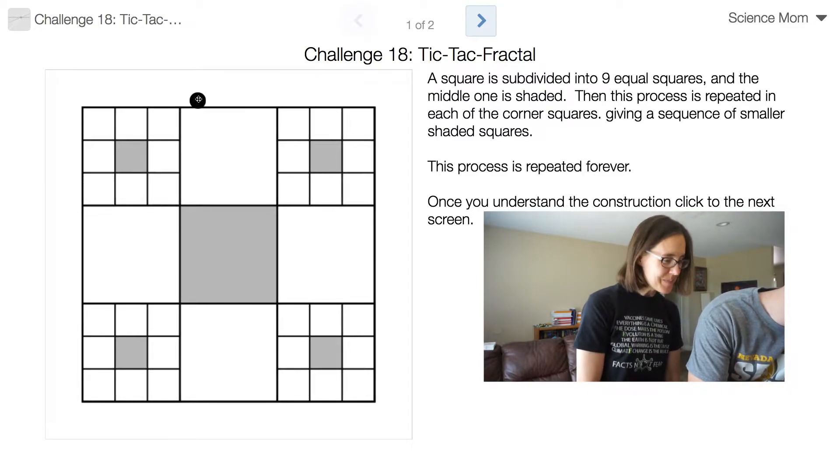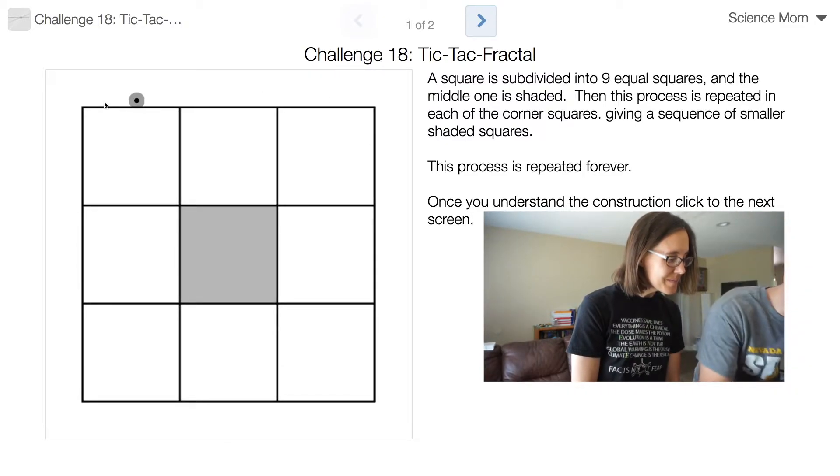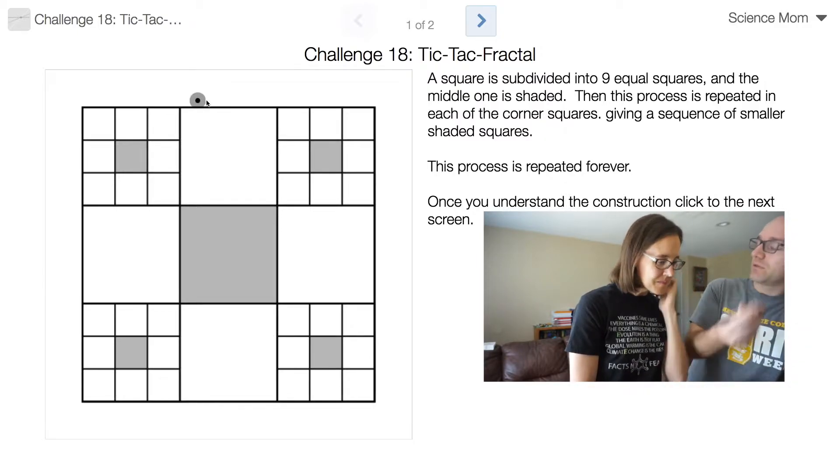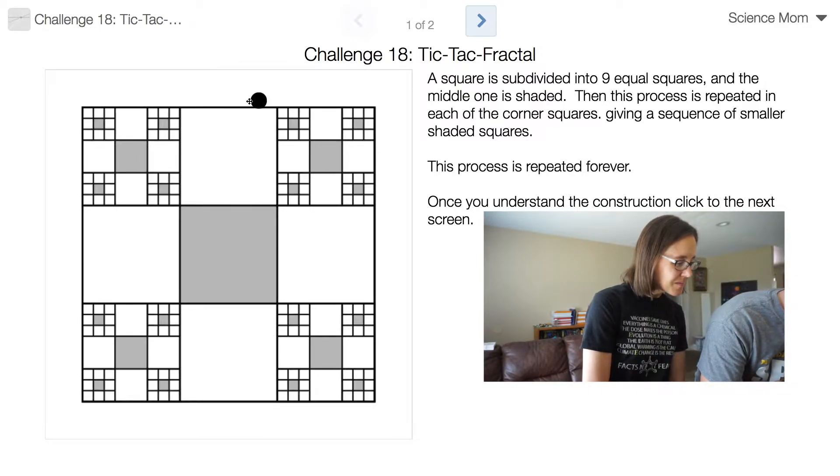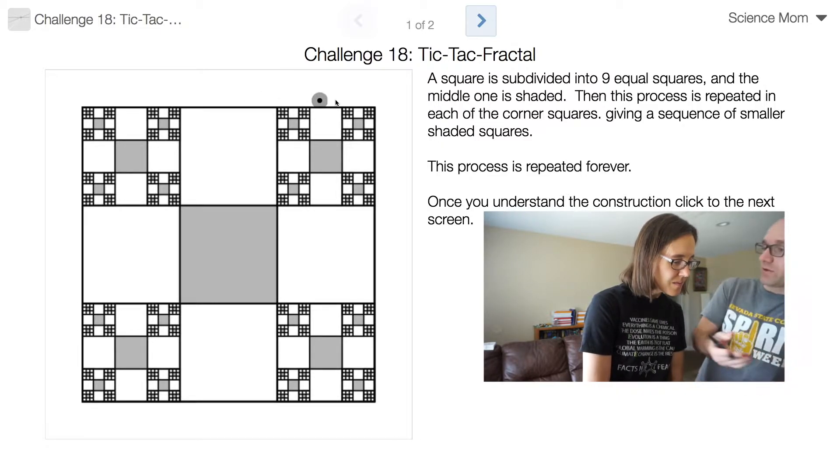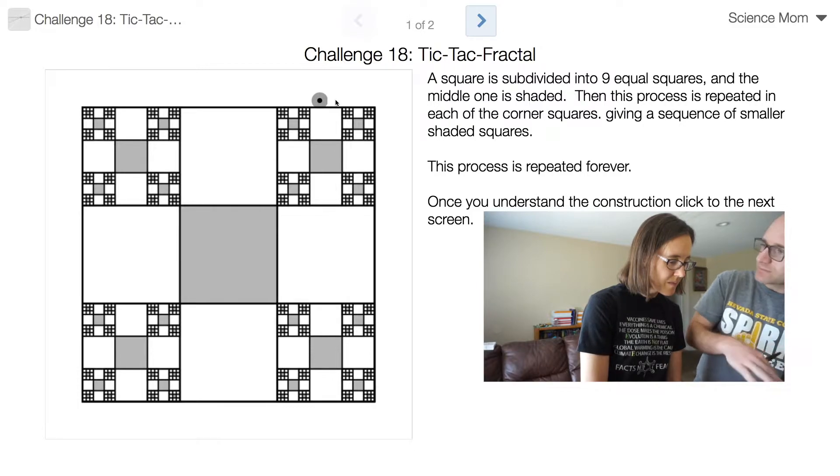So this is something like a tic-tac-toe grid where I shade in the center square. Then I do the same thing to the four corner squares, and each of those gets further subdivided, and so on forever and ever. See the pattern?